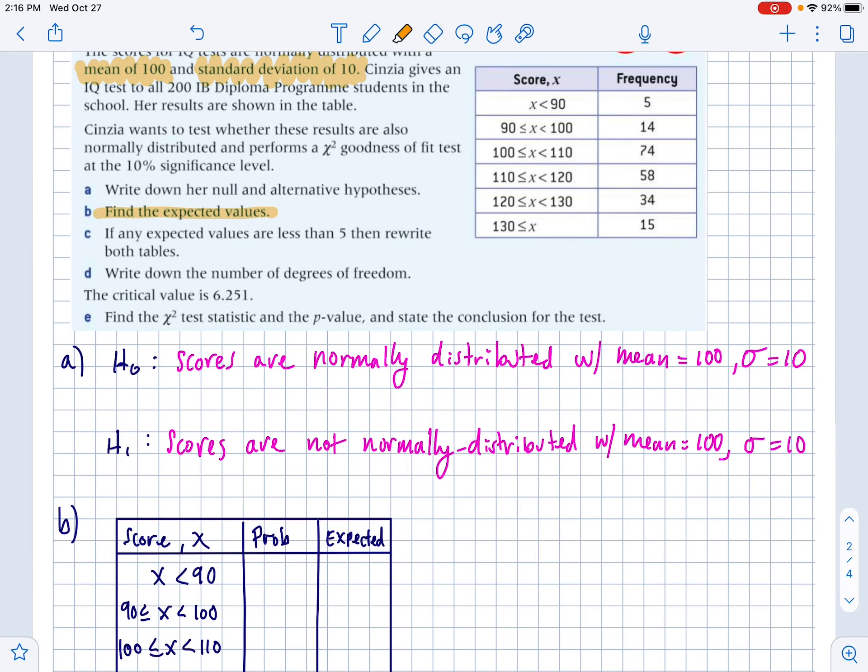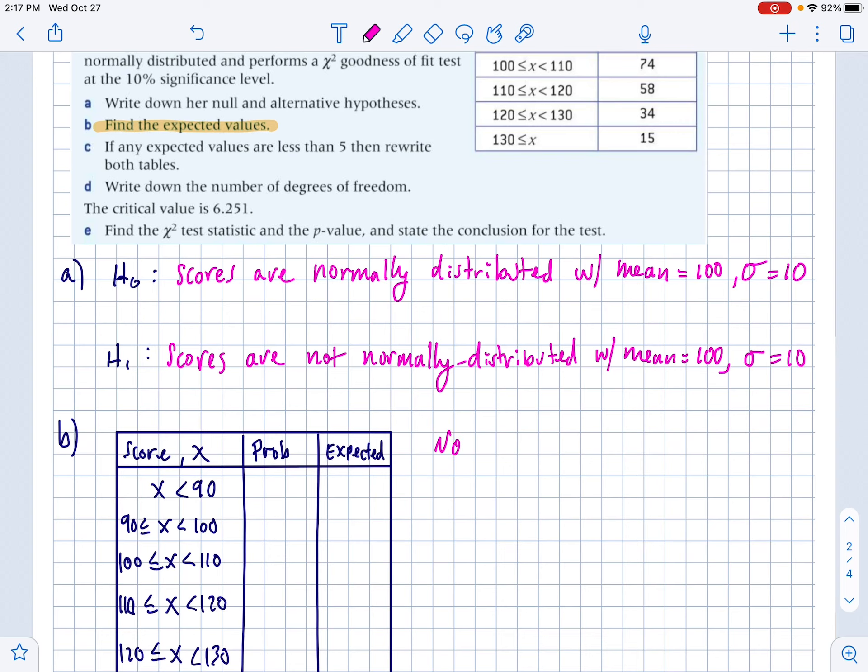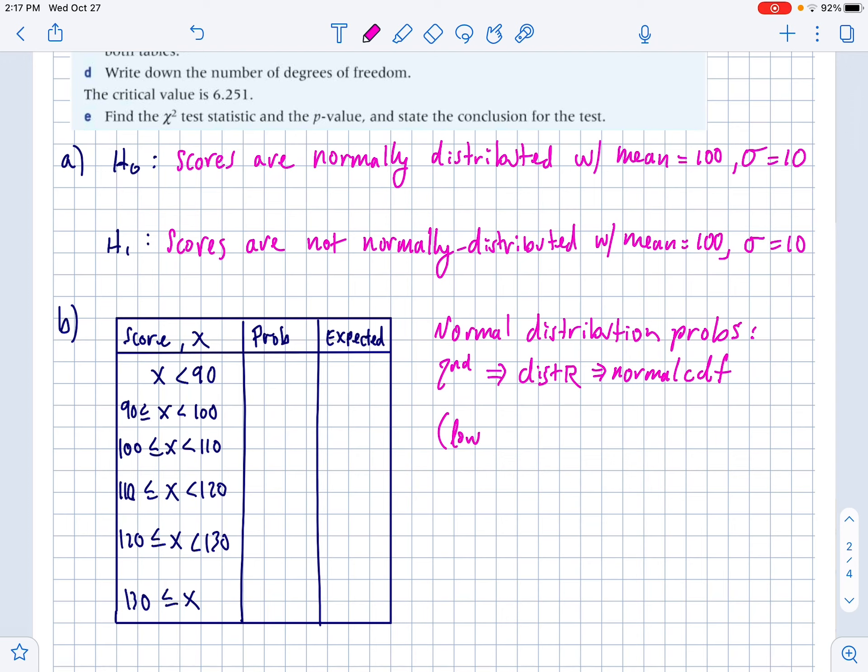So, part B, find the expected values. The expected values is kind of tricky because you have to use your calculator to tell you what the probability of falling within certain scores are with a normal distribution with a mean of 100 and a standard deviation of 10. So the way you're going to do that is you're going to hit second and then distr. And I'm also going to put a PDF to this in our notes as well. Second distr, which is a button above your VARS button. And then you're going to use normal CDF.